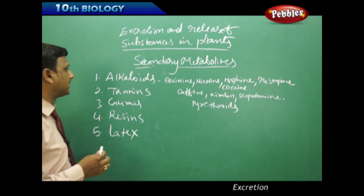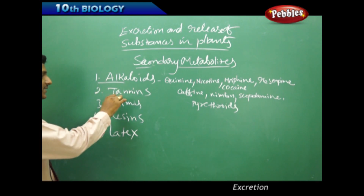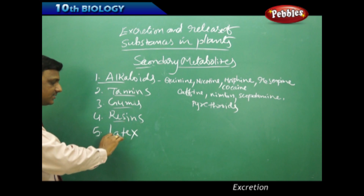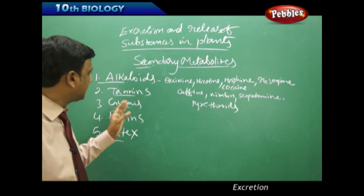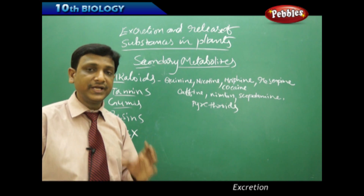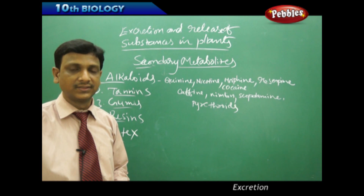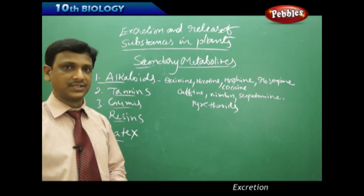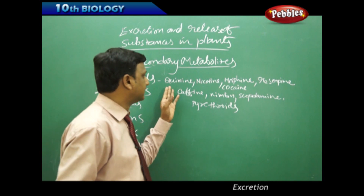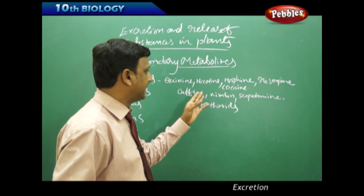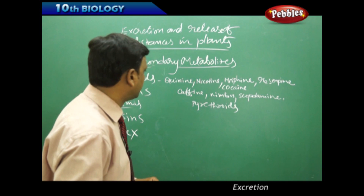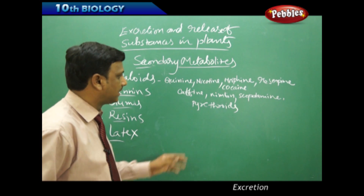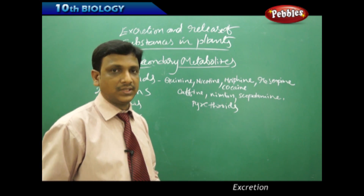The secondary metabolites include alkaloids, tannins, gums, resins, and latex — all of which have very good commercial uses. Alkaloids include quinine, nicotine, morphine, cocaine, reserpine, caffeine, nimbine, scopolamine, and pyrethroids. Alkaloids are nitrogenous compounds and most of them are poisonous. Even though they are poisonous, many are used as medicines, painkillers, antibiotics, antiseptics, and insecticides.